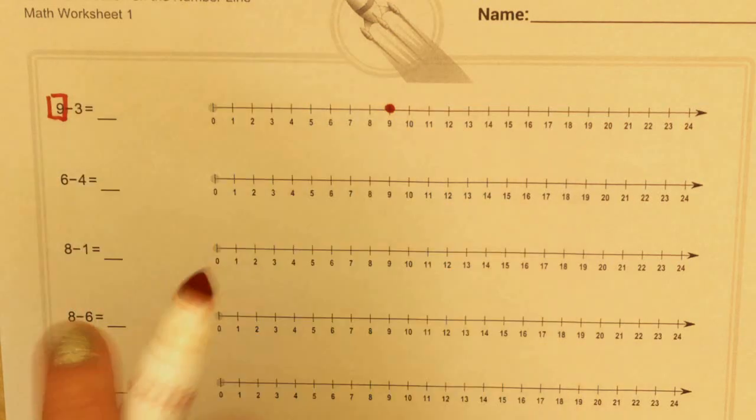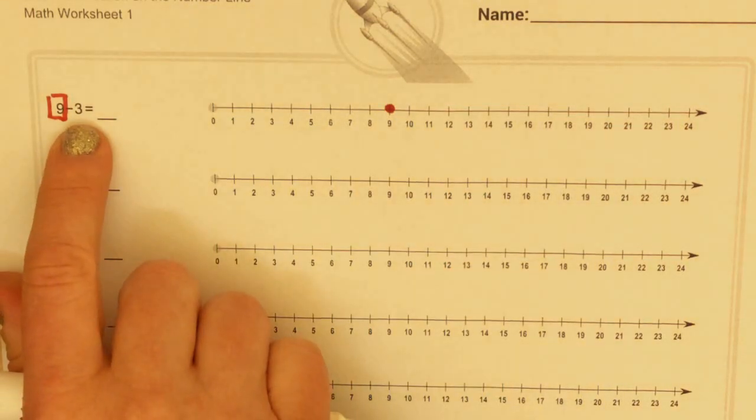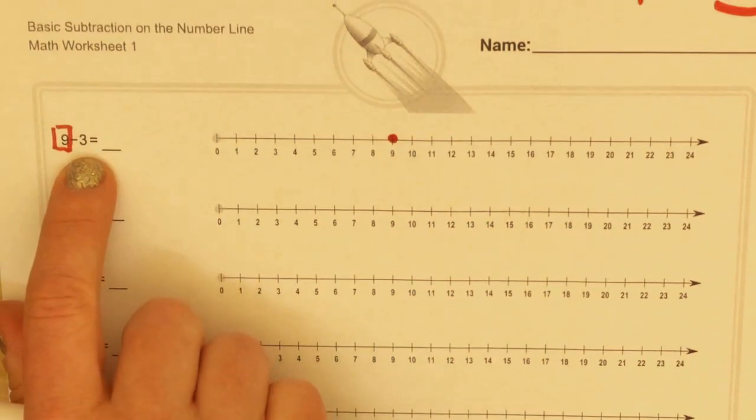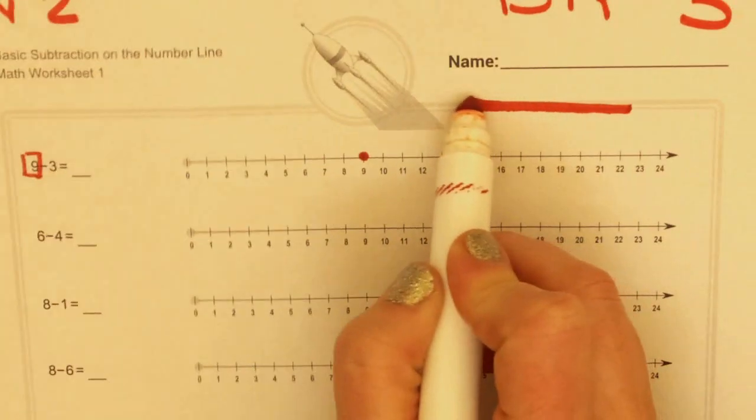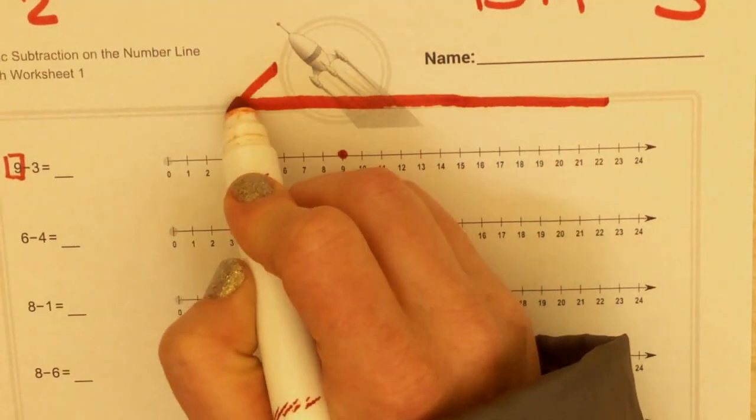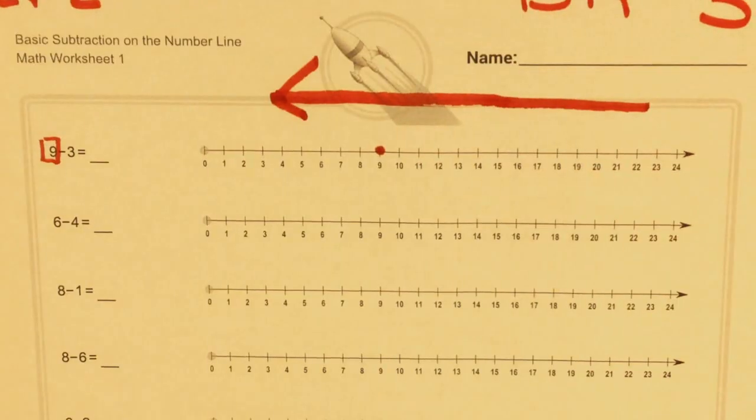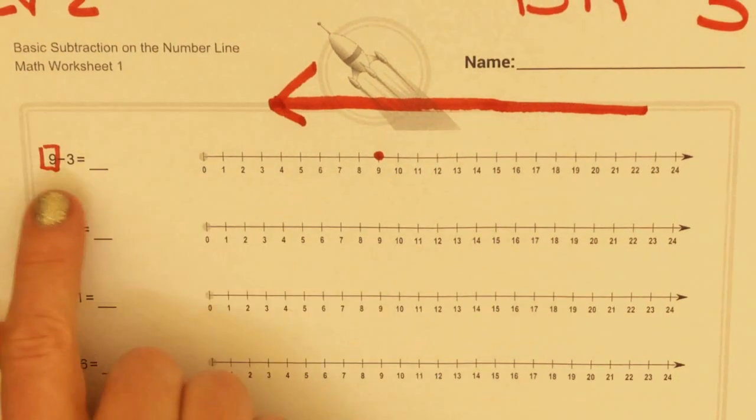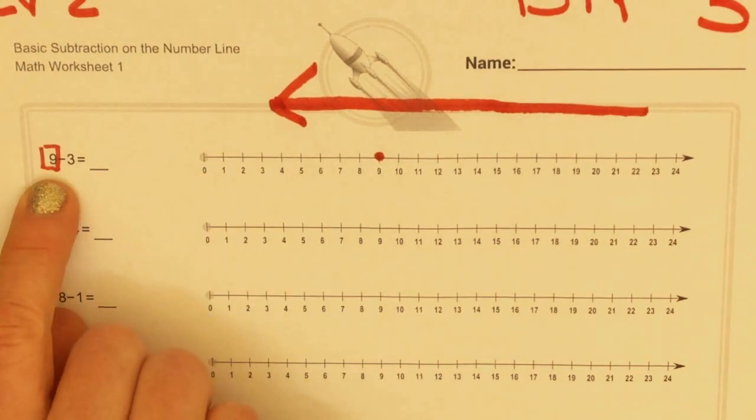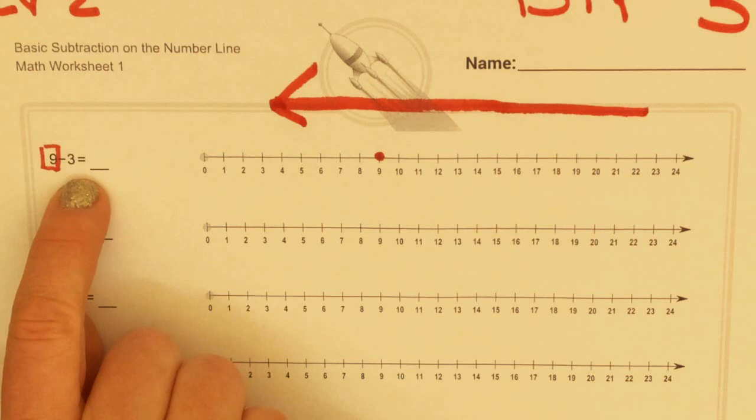Now this number here, 3, tells me how many hops I'm going to make. With subtraction, we move down the number line. We're going to be decreasing, or you could think of it as going left on the number line. So this problem tells me to start on 9 and take 3 hops. Watch closely how I draw these hops.